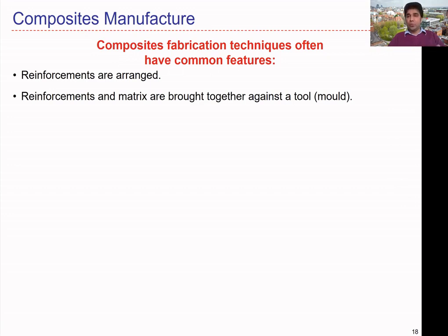If we use powder, particle form, or short fibers, alignment could be random, but we can set specific processing conditions to align the fibers as desired. For example, to enhance alignment in the processing direction, we can control processing parameters to get the desired alignment. It is quite difficult, but we can influence the arrangement of reinforcements during manufacturing if we understand the processing or flow behavior.